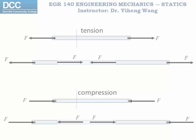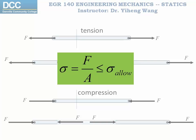Actually, it is not the force that matters, because we can simply use a thicker, bigger member, and that seems to fix the problem. It is the force over unit area — stress — that cannot exceed a certain value. The stress associated with the internal normal force, like the ones in the truss members, is normal stress sigma, which is calculated as F over the cross-sectional area A, and it should not be greater than an allowable value.